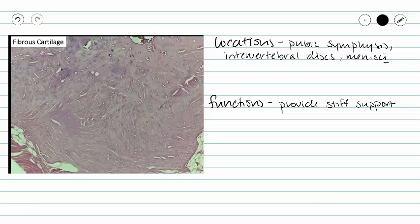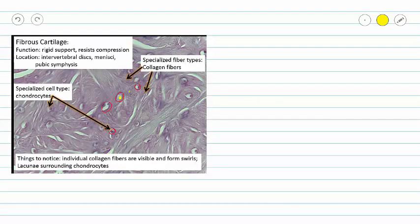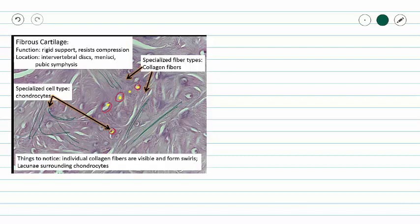Here in our summary slide we have all of that information, and we've zoomed in so we can see our lacunae a little bit more clearly. Within our lacunae we can see our chondrocytes — they kind of appear as just a little dot. They're not as prominent as they are in our hyaline cartilage. And lastly we can see our collagen fibers moving in different directions, sometimes swirling, but we can see individual fibers in between our lacunae.